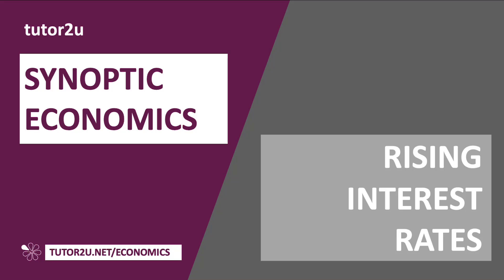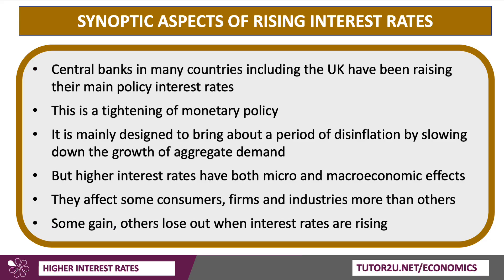Hi there. Geoff here with another video looking at synoptic economics. This time we're looking at the micro and macro consequences of rising interest rates. Central banks in many countries, including the Bank of England, have been raising their main policy interest rates. This is a tightening or deflationary monetary policy designed to bring about disinflation — a fall in inflation — by mainly slowing down the growth of aggregate demand. Higher interest rates have both micro and macroeconomic effects, affecting both the level of the firm, the household, and the industry, as well as the wider macro economy. And they affect some consumers, firms, and industries more than others — there's an asymmetry in impact. Some gain, others lose out when interest rates are rising.